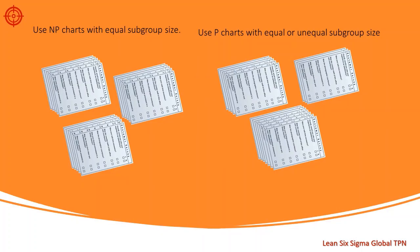We can use an np chart to monitor the total number of satisfied customers in the sample when the sample size is constant over time. The p chart monitors the proportion of satisfied customers in the sample, and the sample size does not need to be constant over time. In this case, we are defining a defective as a satisfied customer — note that the attribute of interest doesn't always have to be negative.